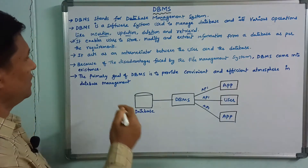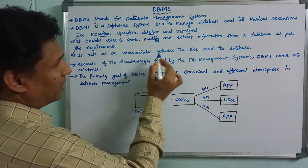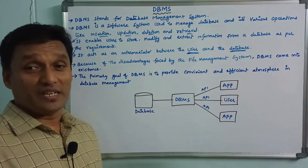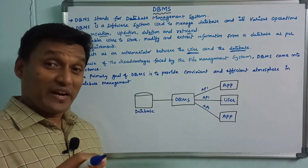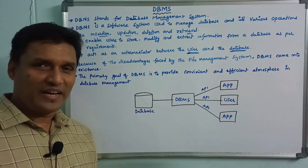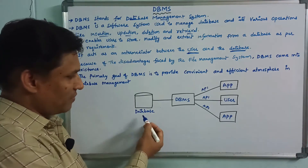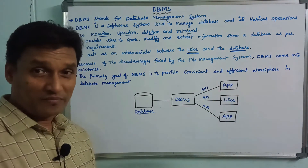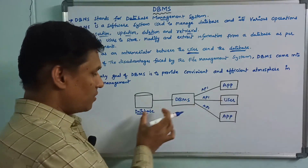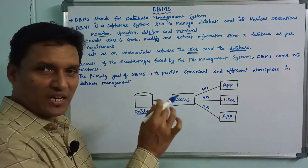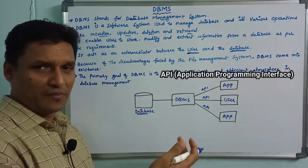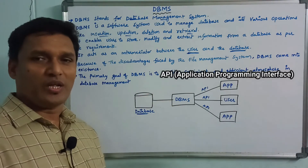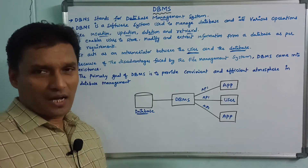DBMS acts as an intermediator between the user and the database. For example, this is a database with users and apps. If you want to access or modify a database, you use DBMS. So DBMS is an intermediator.